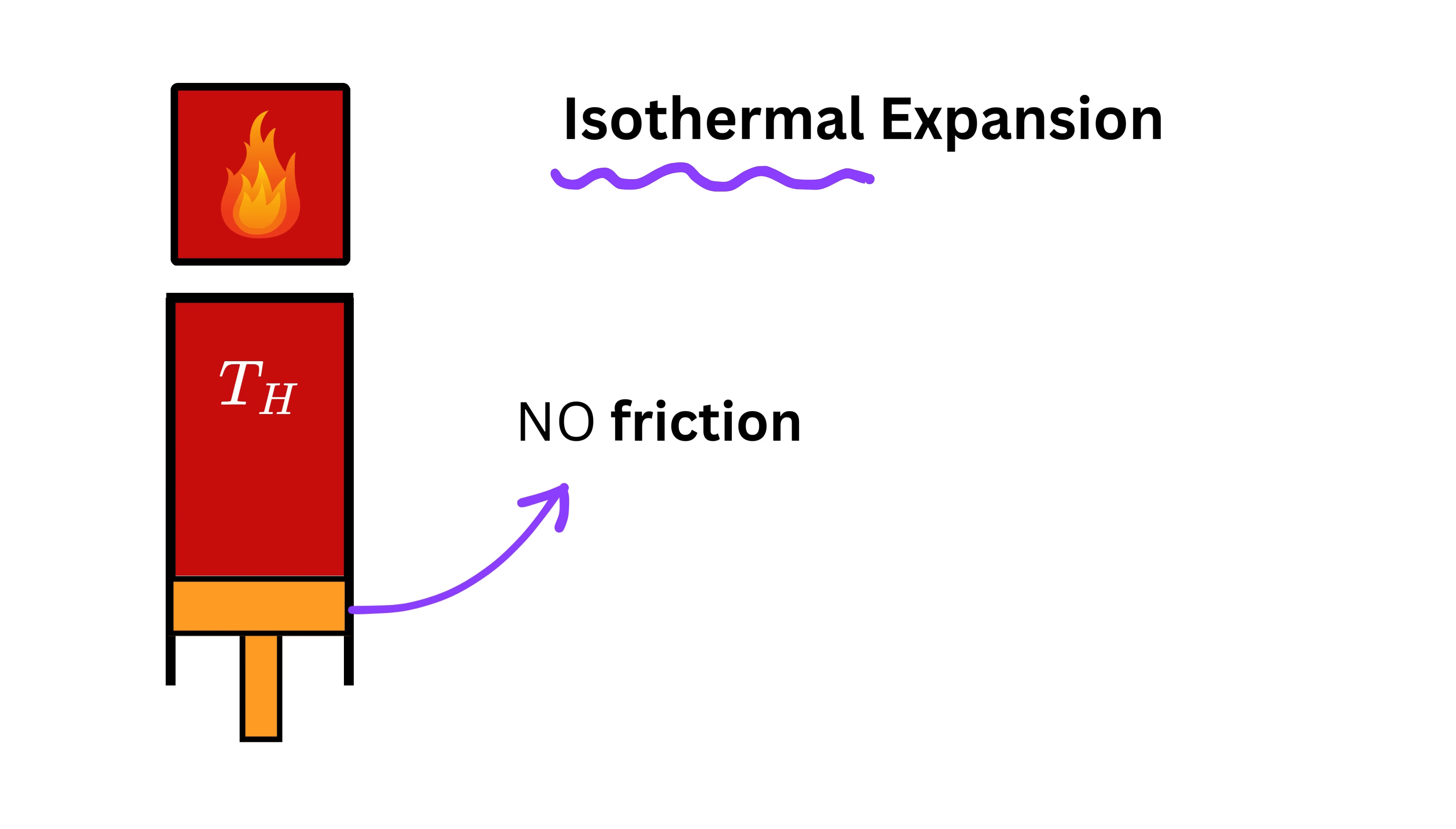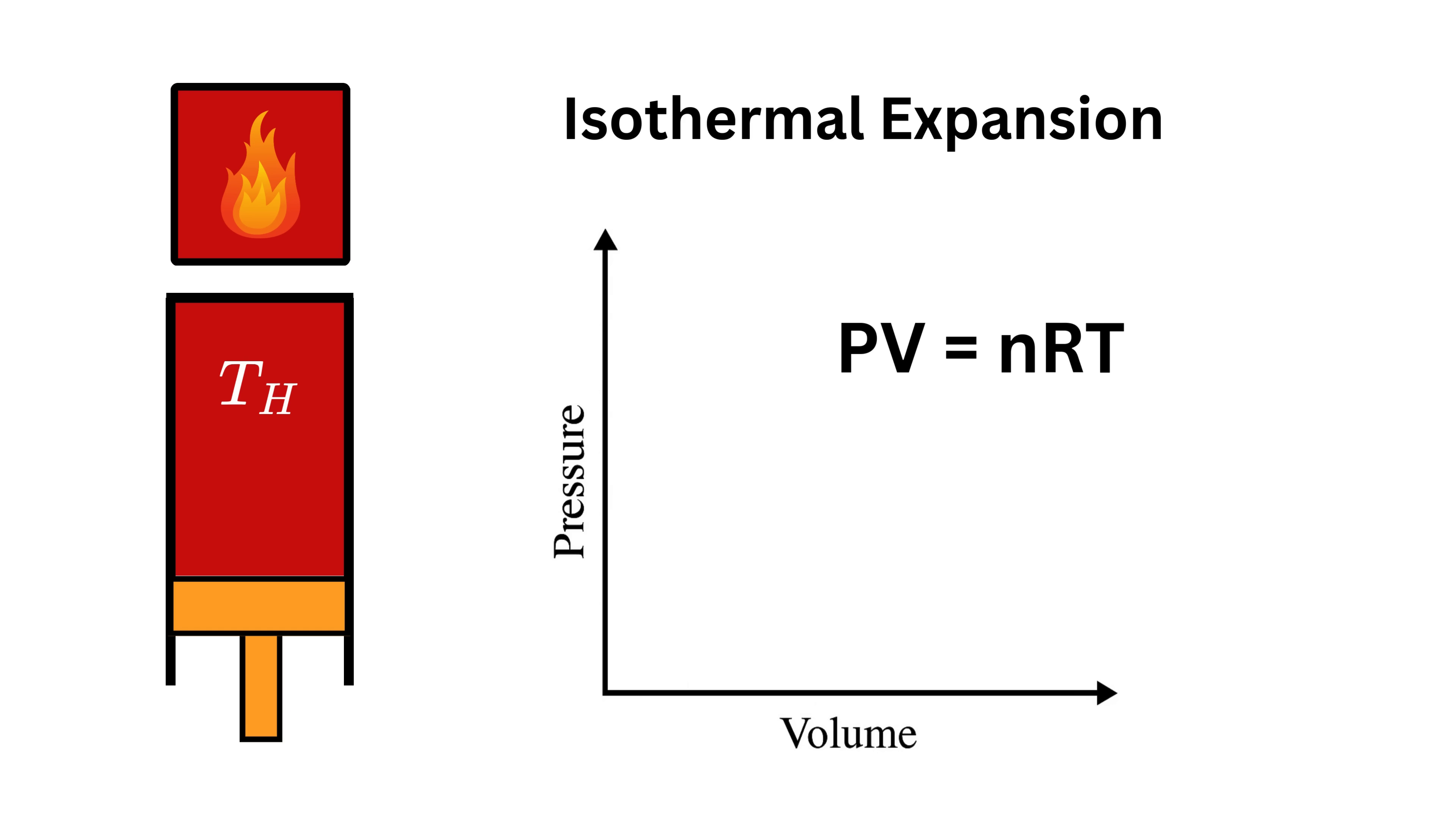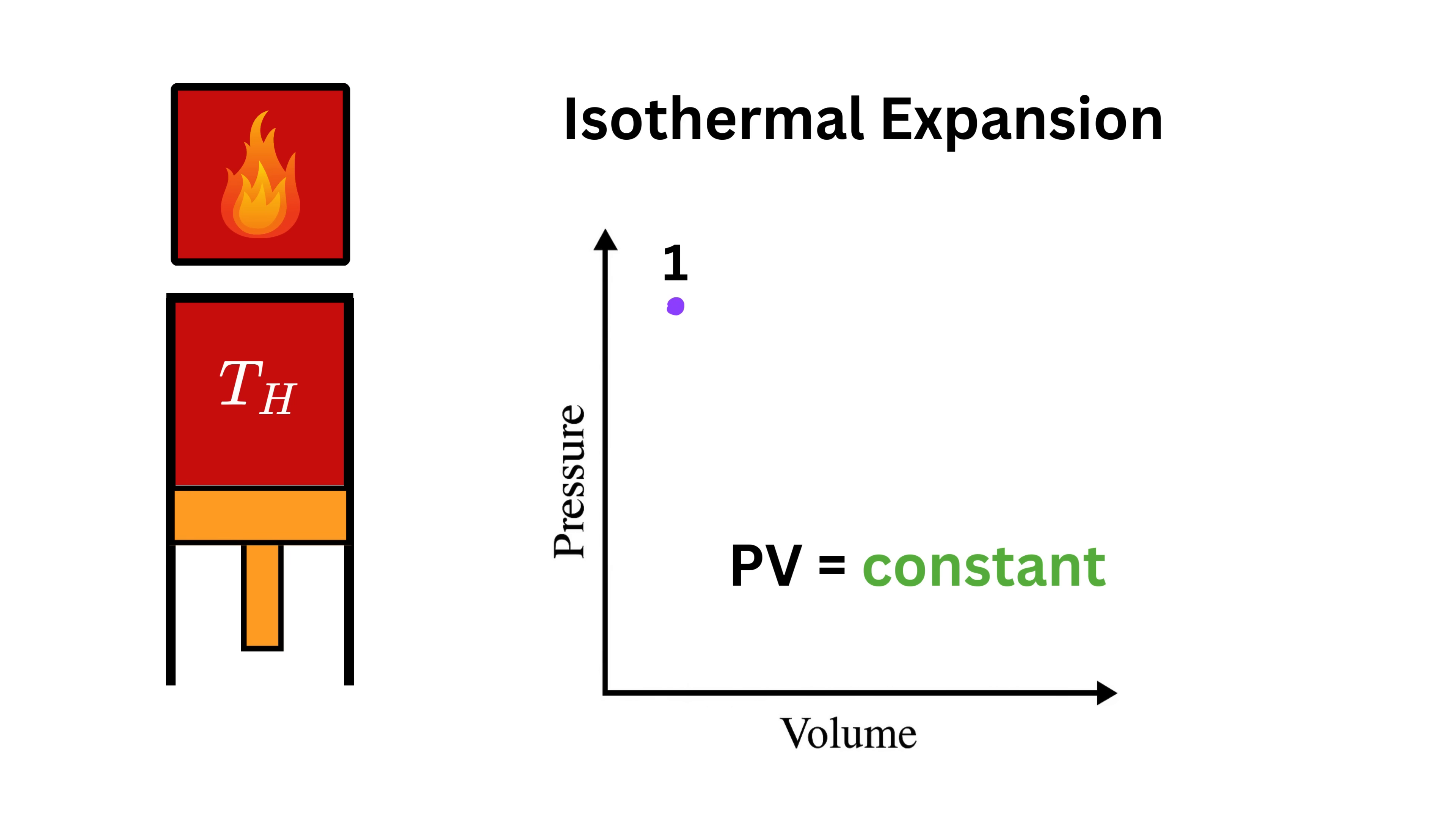This means that the gas does not keep any of the heat with it. Instead, all the heat it receives is directly used to push the piston outward. So the gas expands smoothly while performing work on the piston. Also note that in this hypothetical scenario there is no friction between cylinder and the piston.